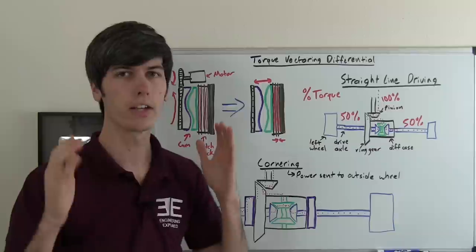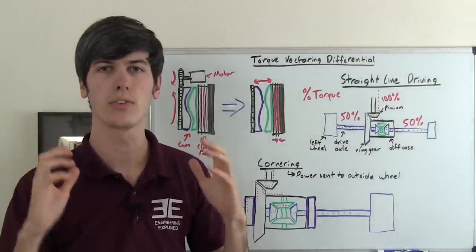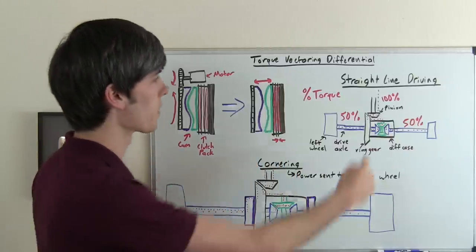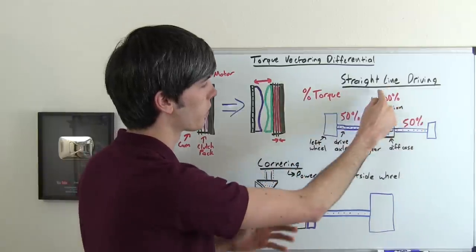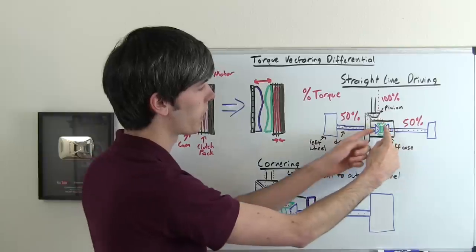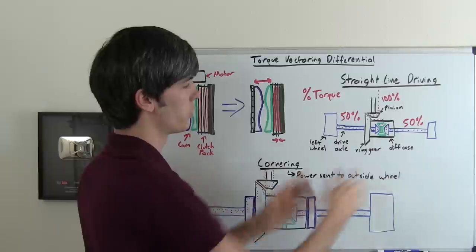So here if you're driving in a straight line a torque vectoring differential like I'm showing here will actually send even power to both wheels so a 50-50 torque distribution so you've got 100% of the torque coming in it's acting just like an open differential so it'll come in through the pinion to the ring gear to the spider gears then to the two axles where it will send an even torque to both sides.